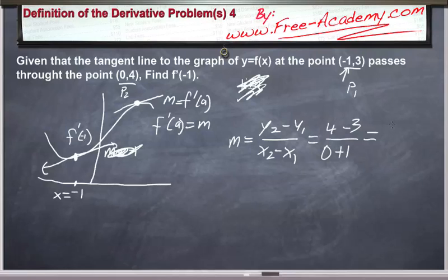To do the math, this is equal to 1 divided by 1 is equal to 1. So f prime of negative 1 is equal to 1.